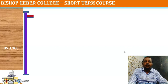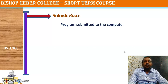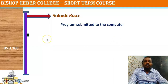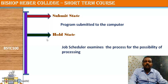A nutshell on the processing of each state. State 1 is the submit state — here the program's code is submitted to the computer. State 2 is the hold state — here the process is held by the computer and it is examined whether it can be executed in the current scenario.